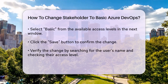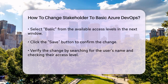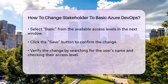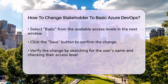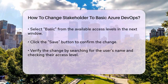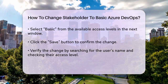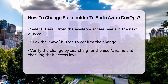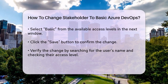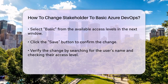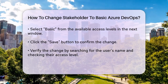It's important to understand the differences between stakeholder and basic access levels. Stakeholders have limited access, especially in private projects, and can't perform tasks like editing wikis, managing pipelines, or changing backlog priorities.